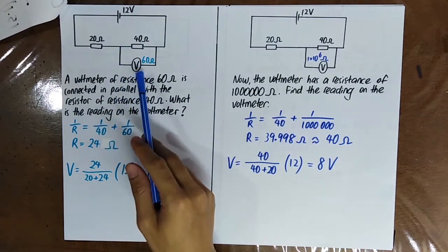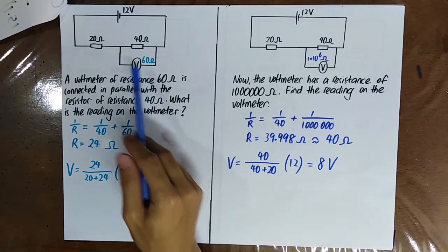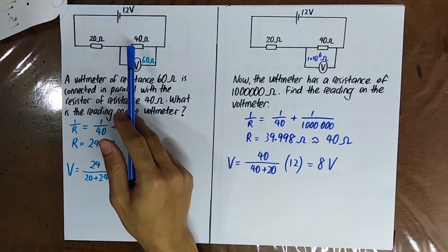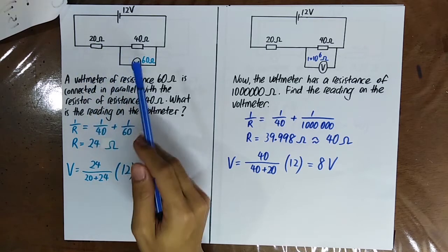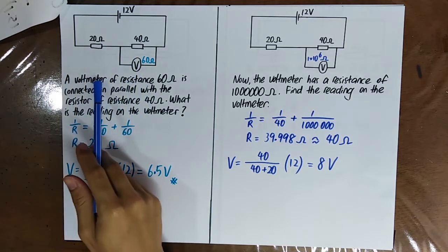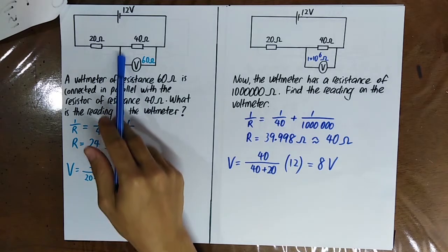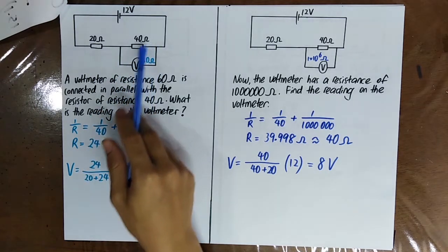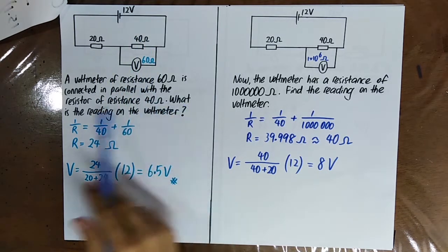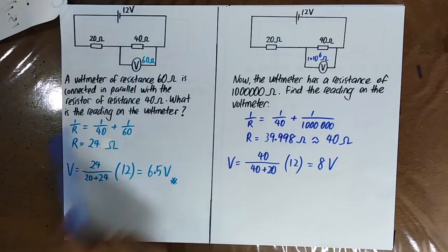You know that a voltmeter must be connected in parallel to measure the potential difference. For example, a voltmeter of resistance 60 ohm is connected in parallel with a resistor of resistance 40 ohm. What is the reading on the voltmeter?